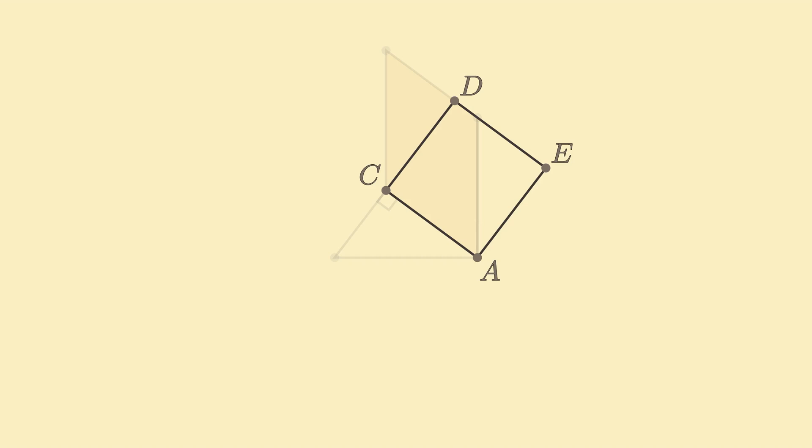Focus on square AEDC. By construction, we know that angle AEH is a right angle. Hence, comparing triangle ACB and triangle AEH, we see that angles ACB and AEH are congruent.